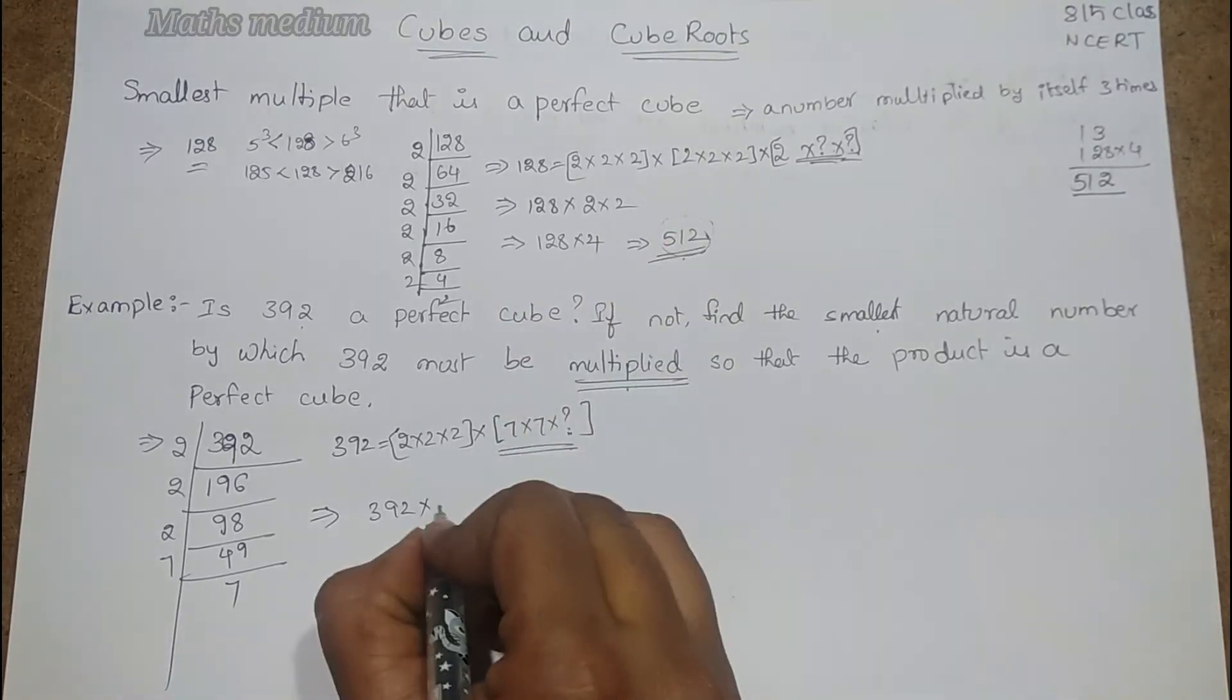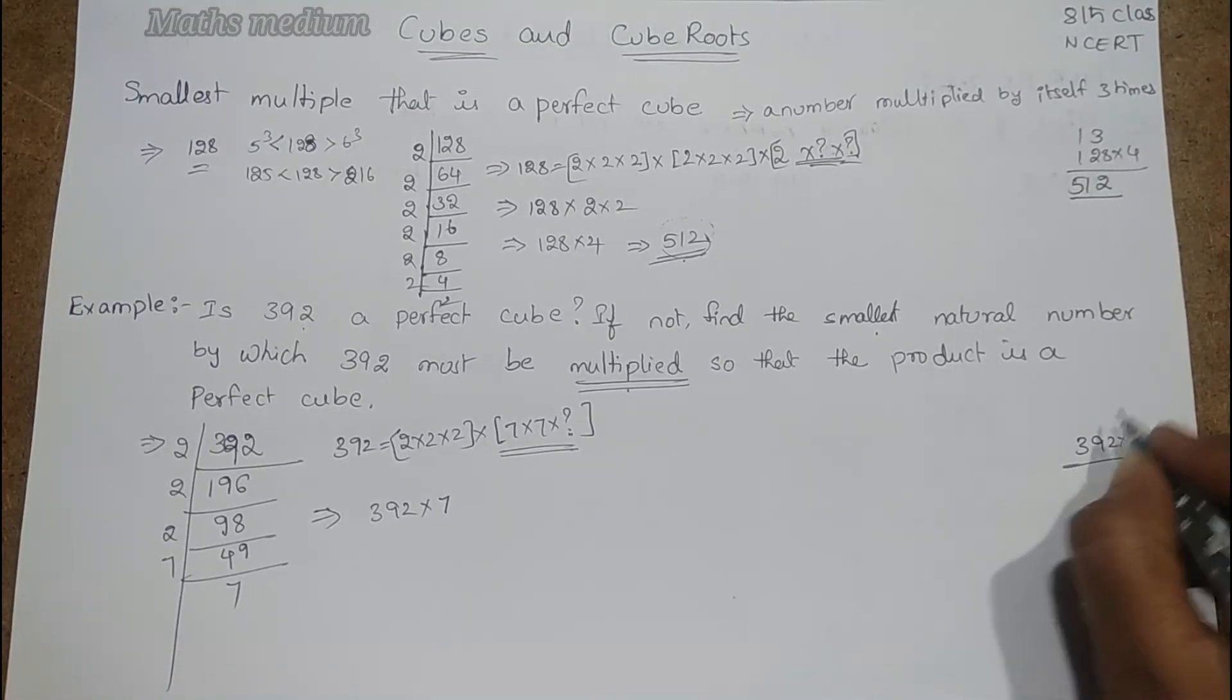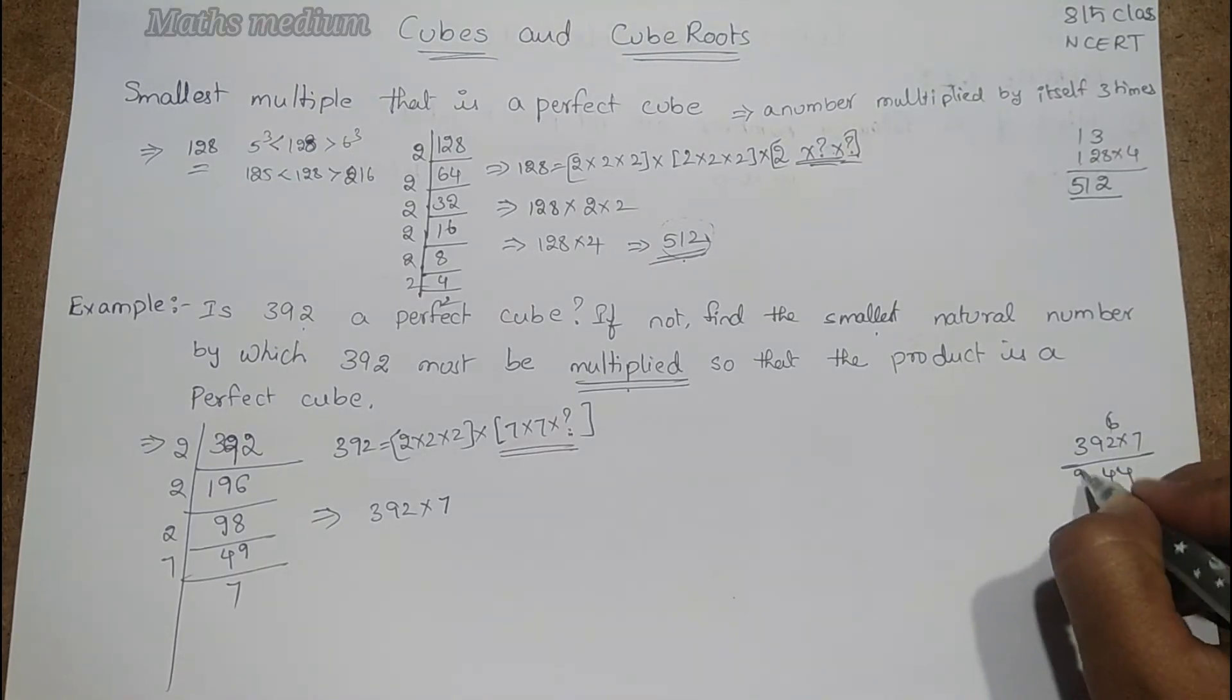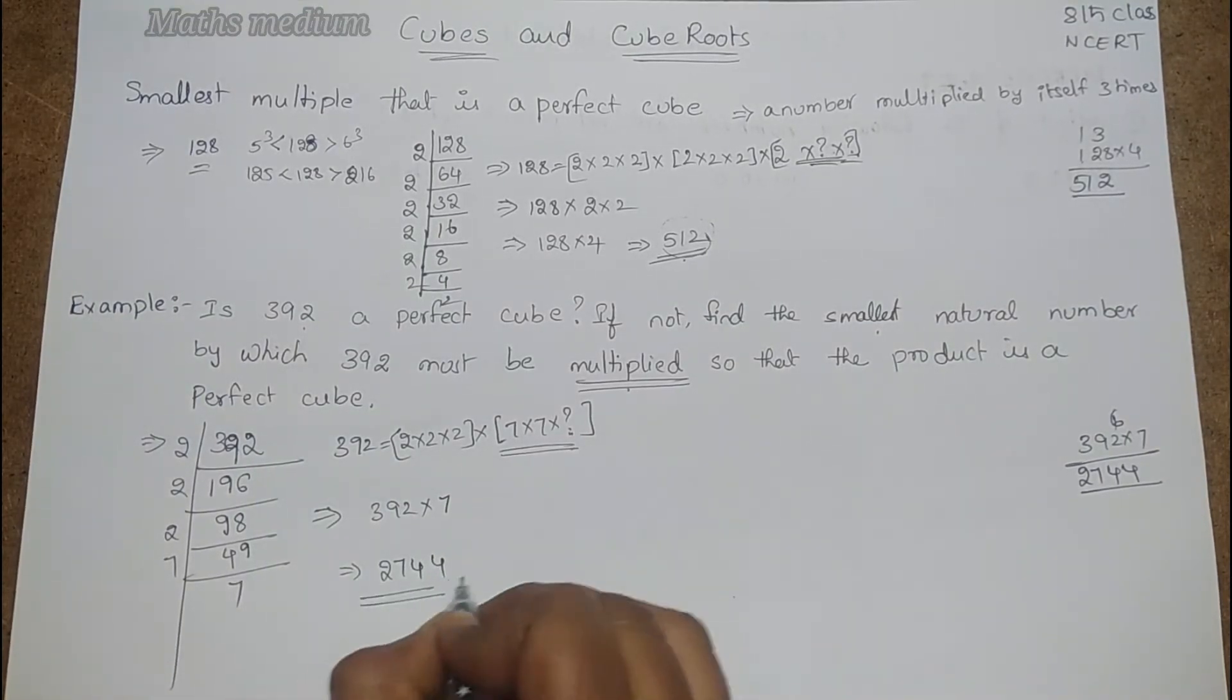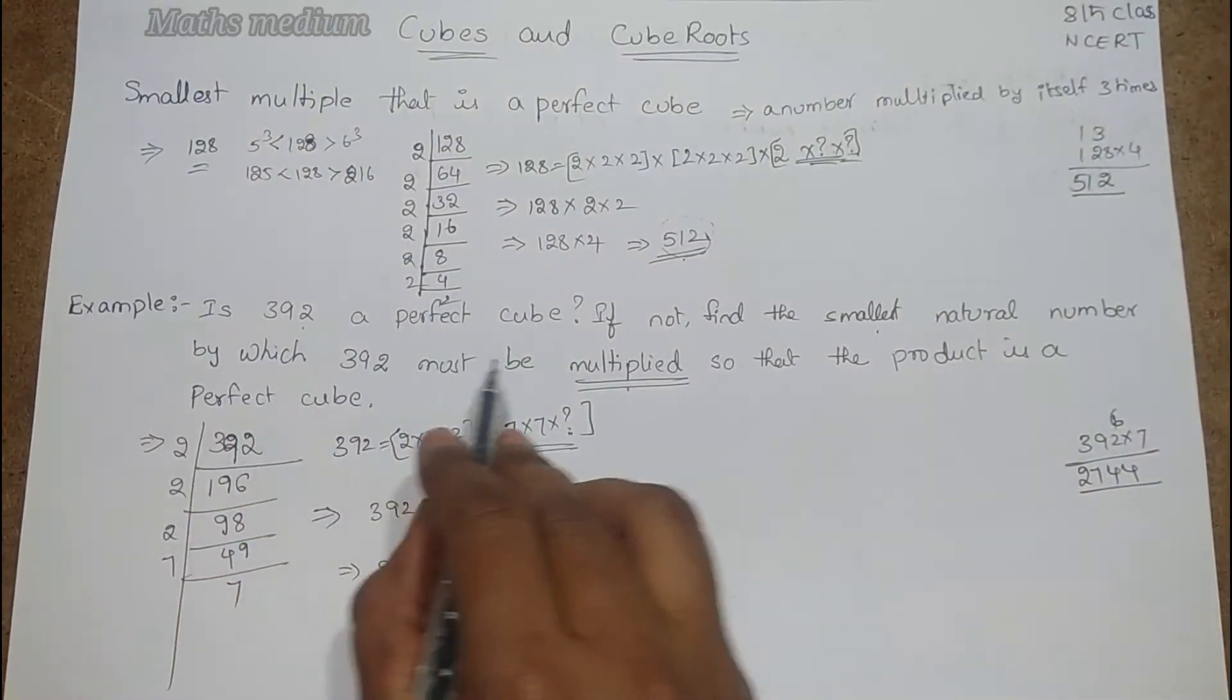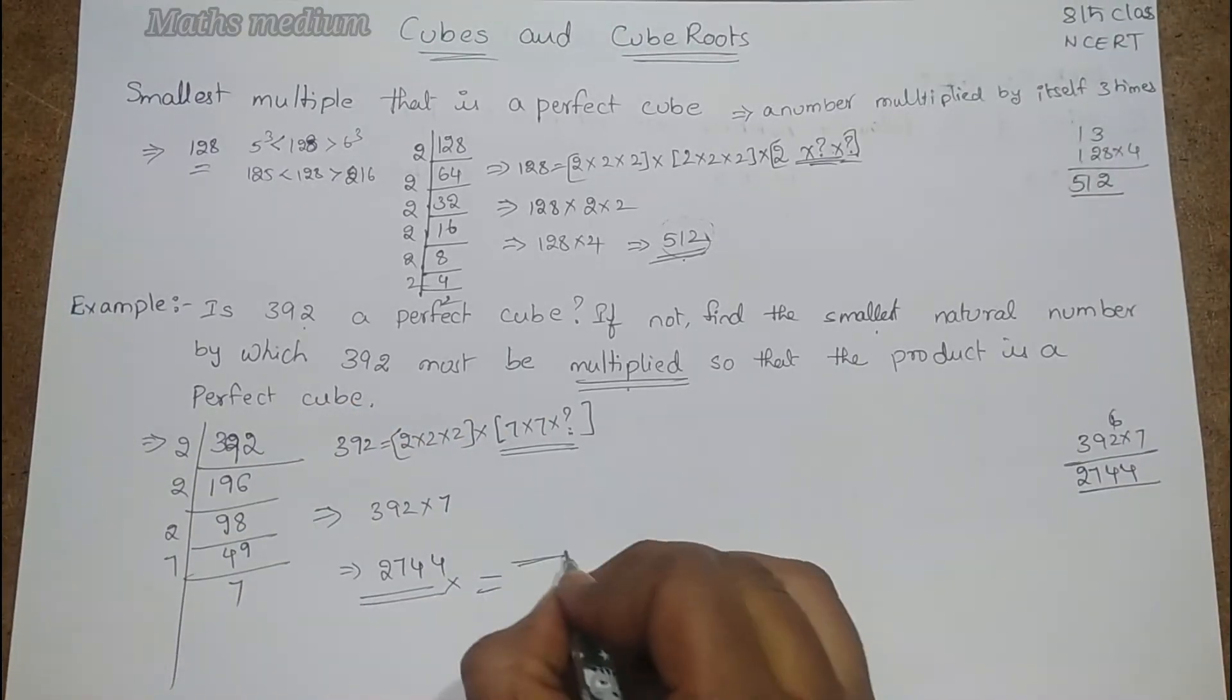392 times 7: 7×2 is 14, 7×9 is 63, 64, 7×3 is 21 plus 6 is 27. So 2744 is the perfect cube, the smallest natural number by which 392 must be multiplied so that the product is a perfect cube.